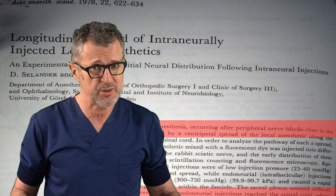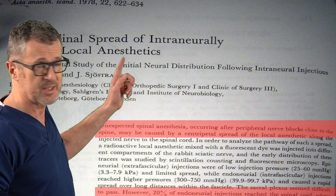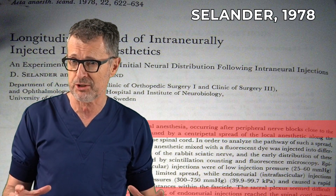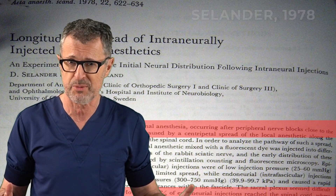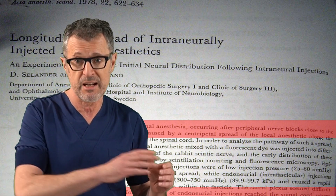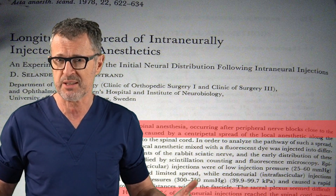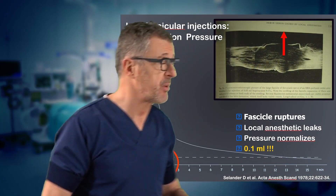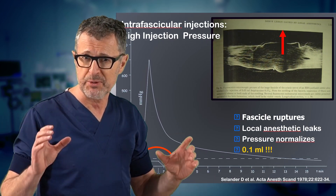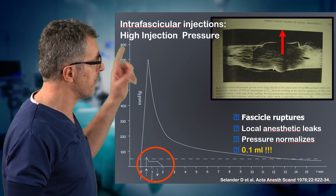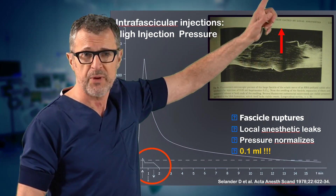Injection pressure monitoring is nothing new. Doc Silander, back in 1978, published that insertion of the needle into the fascicle can result in a very high injection pressure and a far spread of the local anesthetic towards the CSF. In his paper, he clearly documented that as little as 0.1 milliliter of local anesthetic injected into the fascicle leads to the rupture of the fascicle.